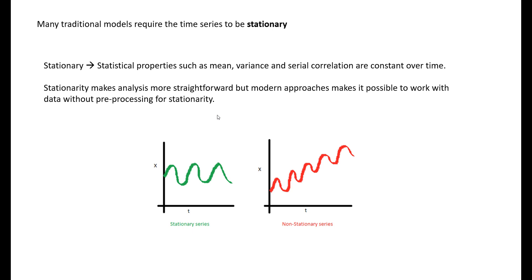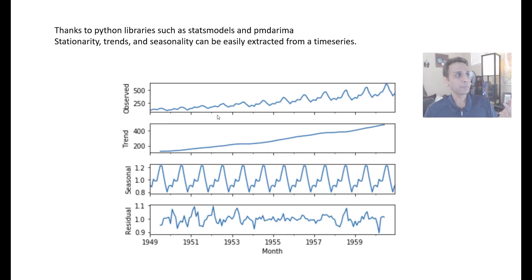Thanks to Python libraries - this used to be something you'd need to code in Excel with a lot of effort - but now with a single line in stats models, which is a Python library I absolutely love, or PMD ARIMA which works very well, you can take your actual observations and obtain a trend. Trend is how the data trends over a long period of time. You can see the trend is more people are flying as you go from 1949 to 1959, the number of people flying is going up.